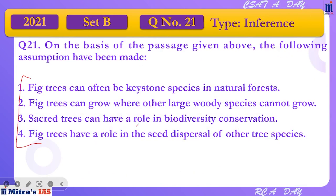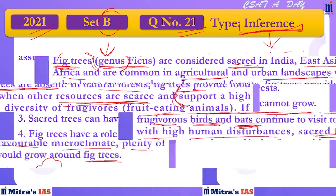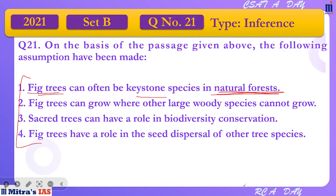Now let's go to the assumptions. Assumption 1: 'Fig tree can often be a keystone species in natural forests.' Humne dekha ki birds or bats ke through fig trees ke neeche doosre plant ke, doosre trees ke species bhi paaye jaate hain — so obviously the fig tree is propagating, contributing to the natural forest. So we will go by the first assumption.